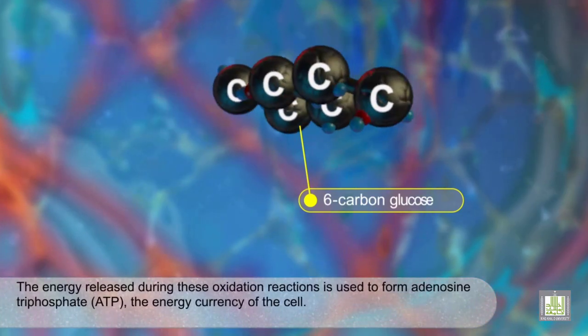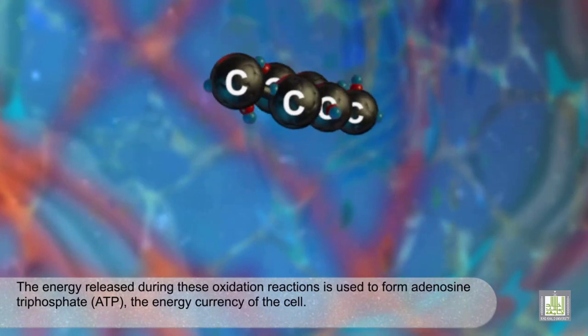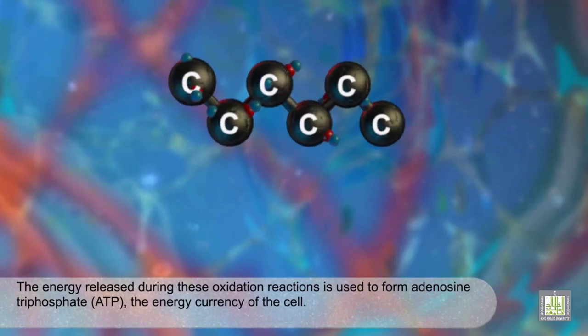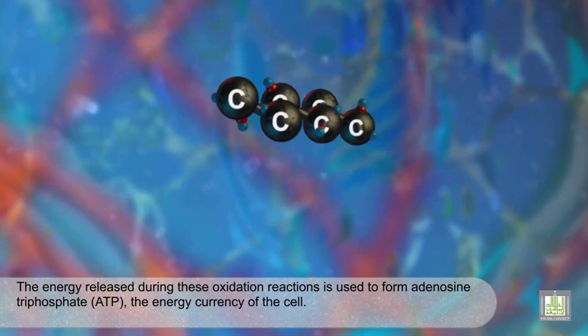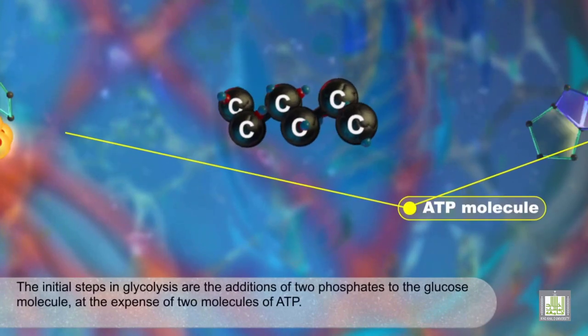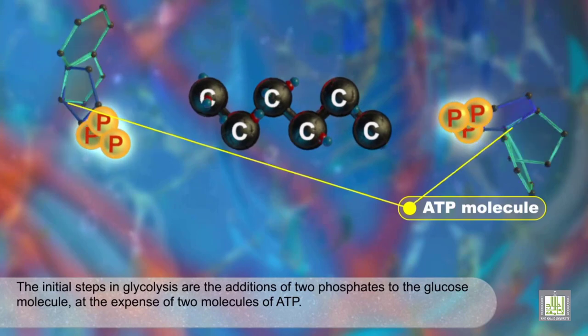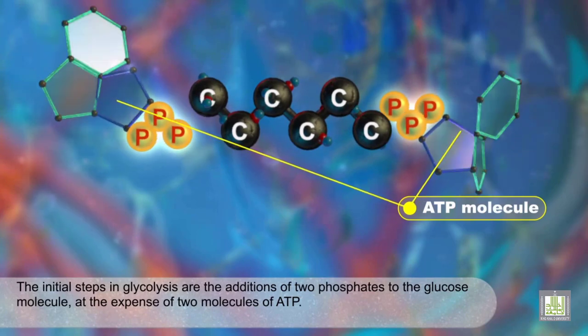The energy released during these oxidation reactions is used to form adenosine triphosphate, ATP, the energy currency of the cell. The initial steps in glycolysis are the additions of two phosphates to the glucose molecule at the expense of two molecules of ATP.